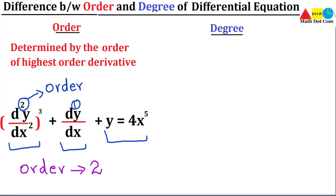You just need to check the terms that include the derivatives and then see the power on the 'd'. Keep this in mind — this power differs from the exponent power on the derivative term; these are not the same, so don't get confused about it. This is all about order: order is determined by the order of the highest order derivative. Here the highest order derivative has order two, so the order of this differential equation is 2.